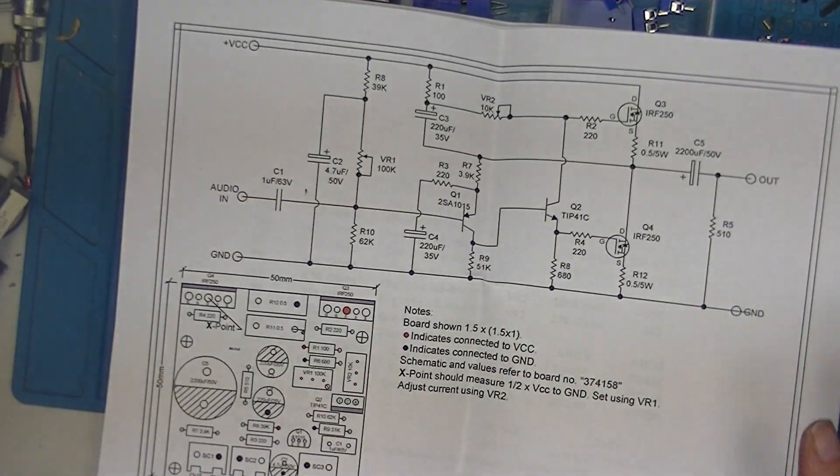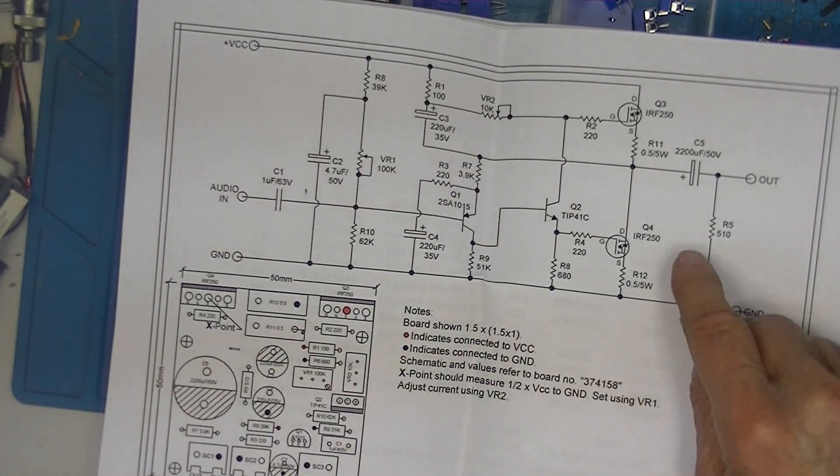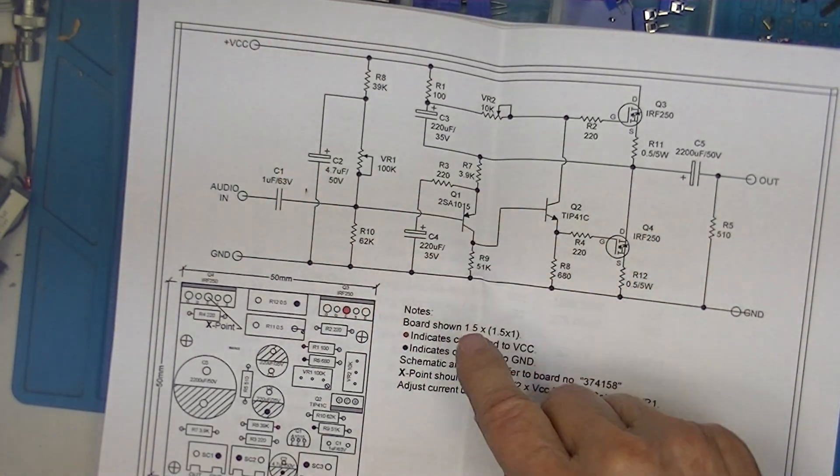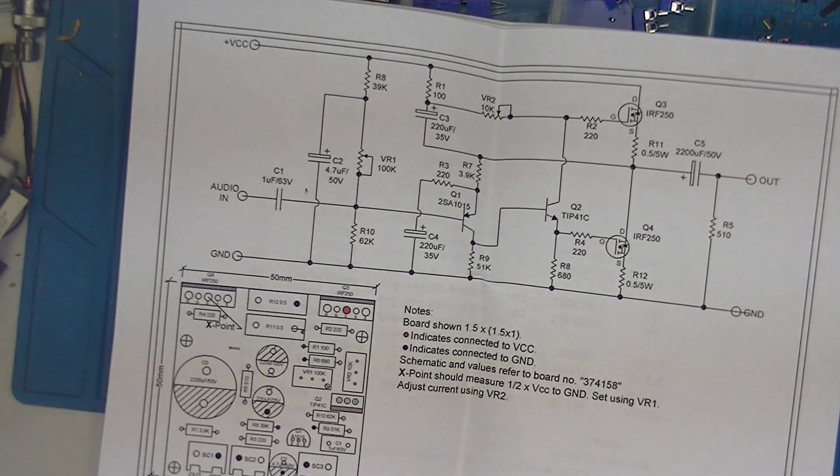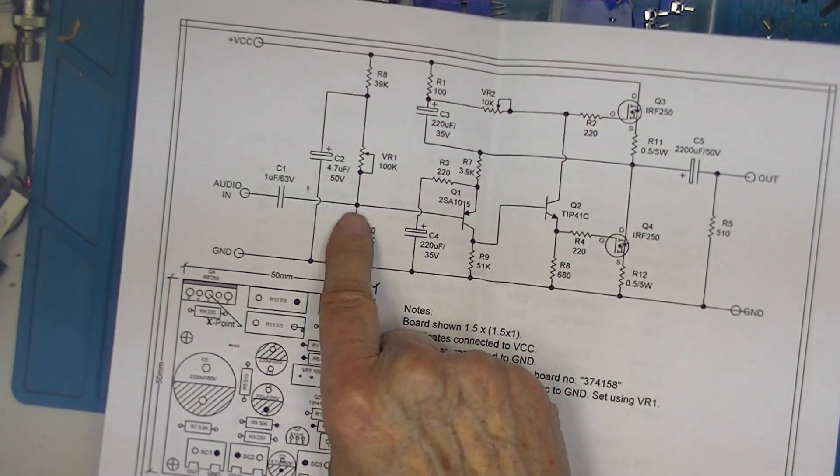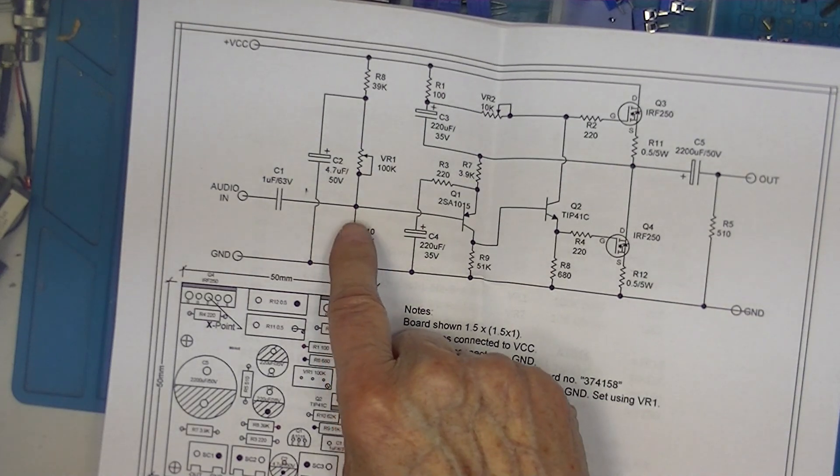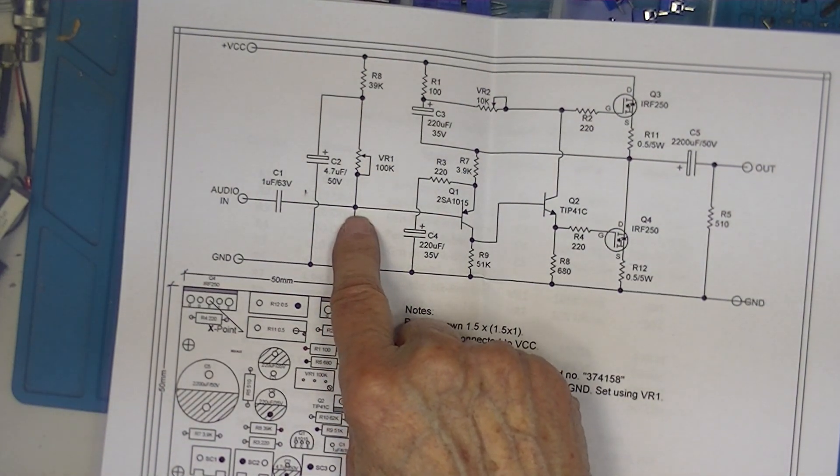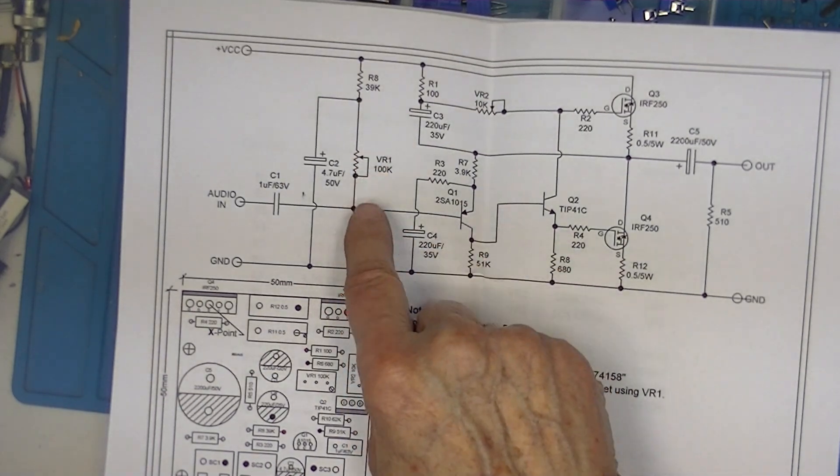Amplifier number one, the one that's built, has no provisions for setting the X point to one half of VCC. I think all the other ones have a way of adjusting the bias voltage on this input stage. It's usually a variable resistor.